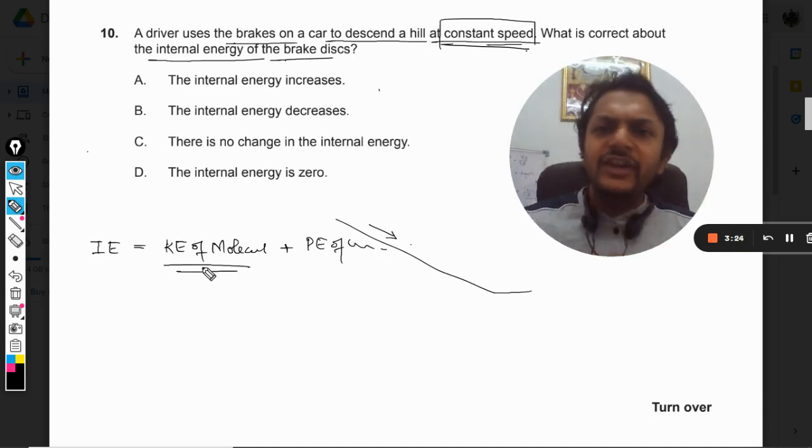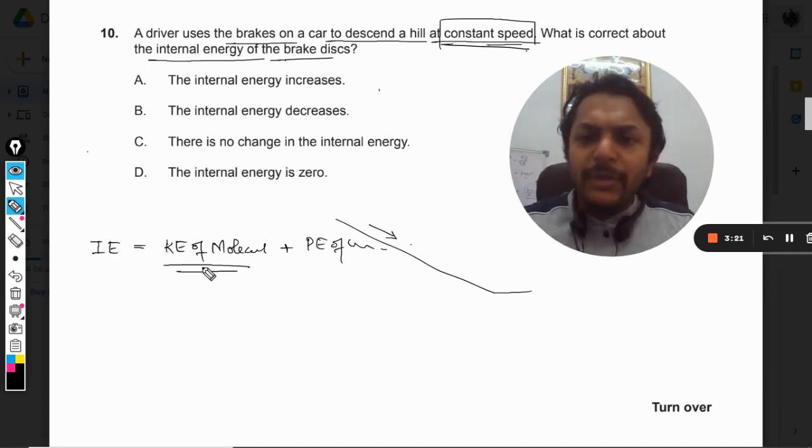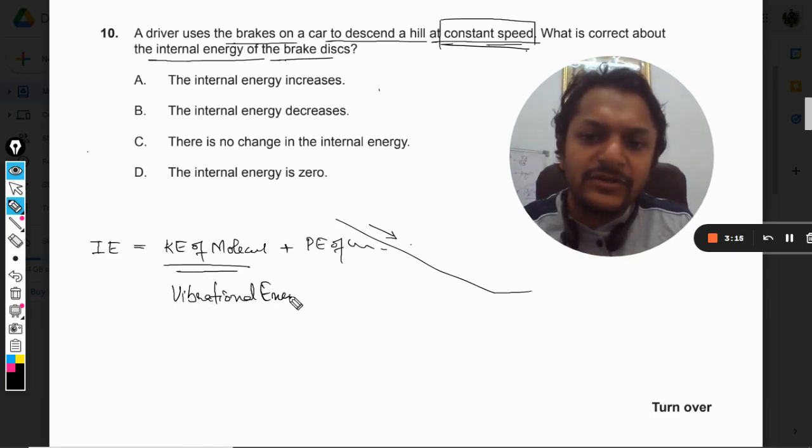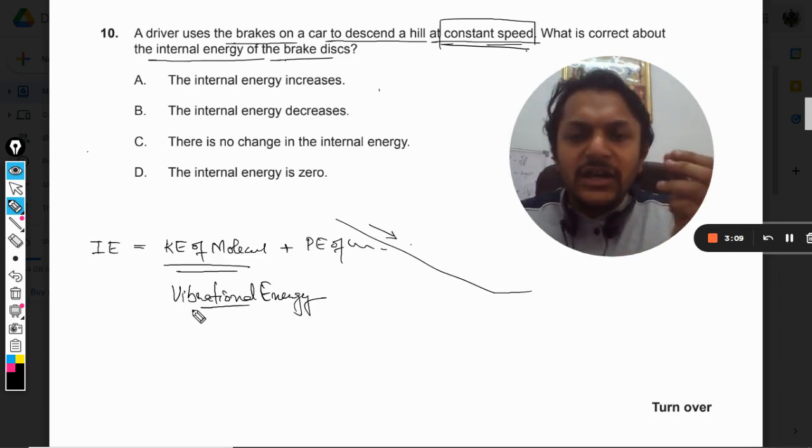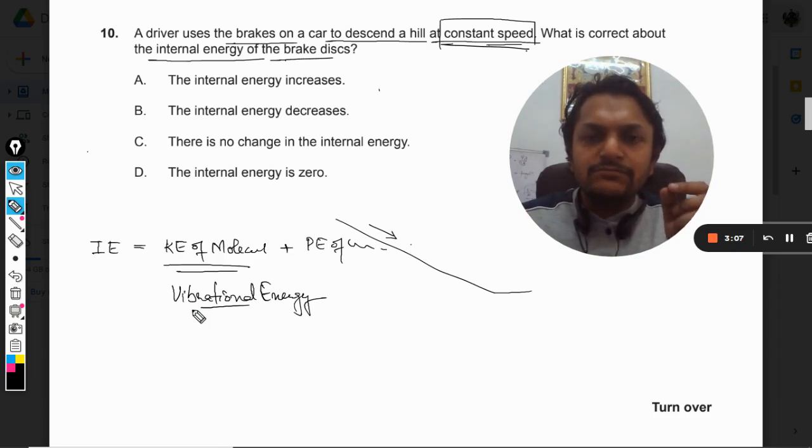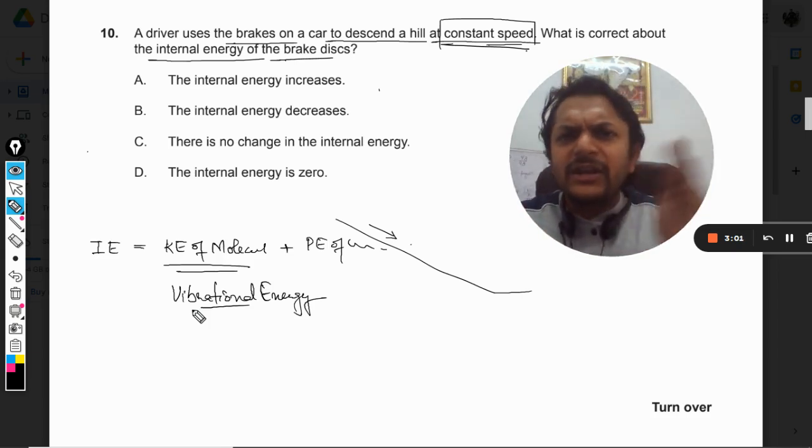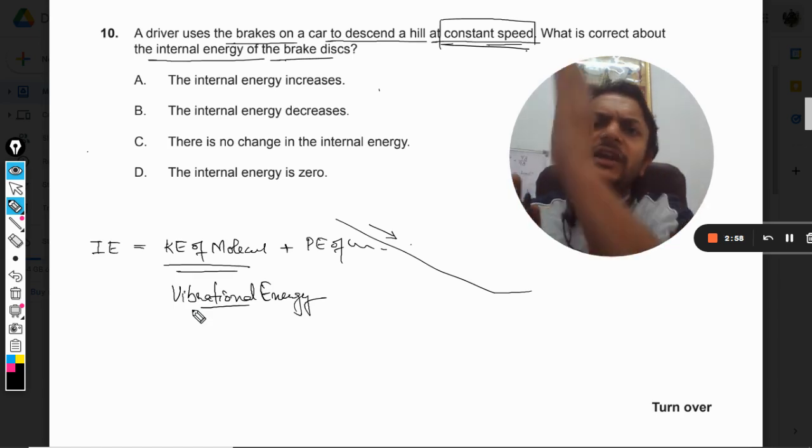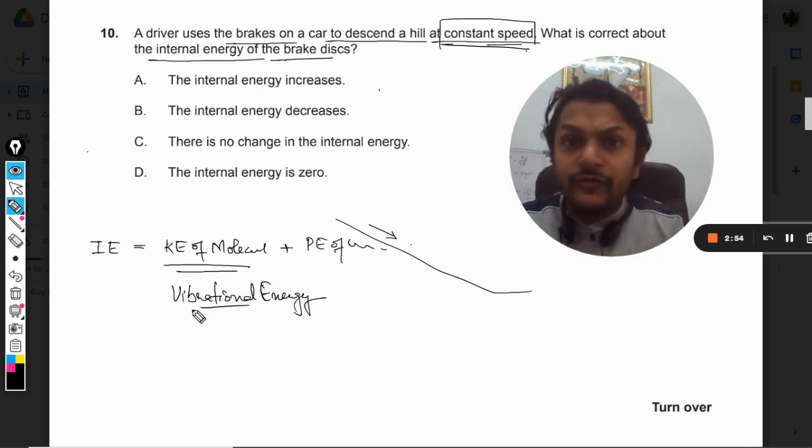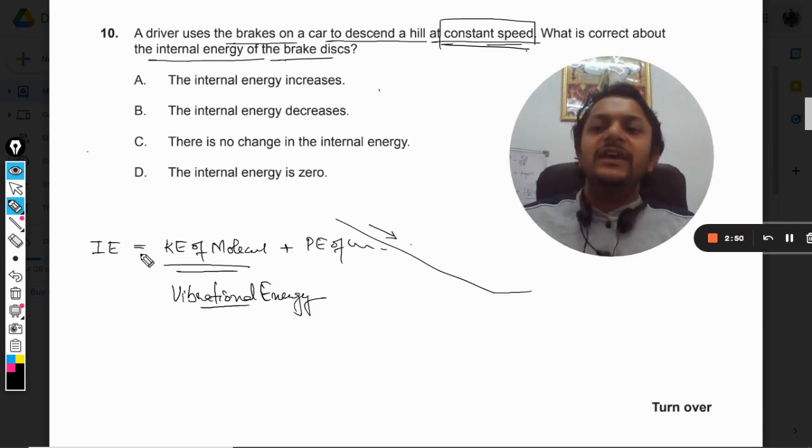Now the molecules are not free to move because it's a solid, but the vibrational energy is increasing. Vibrational energy means when the temperature increases, the atoms which are placed in the structure are now vibrating vigorously. Because it's a solid they cannot move around, so they keep vibrating. The vibration becomes even more vigorous - the more the temperature, the more the vibration.